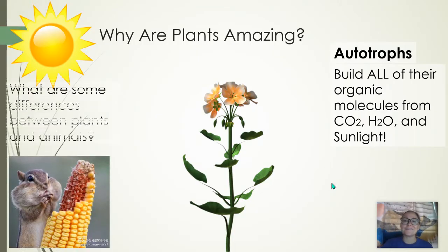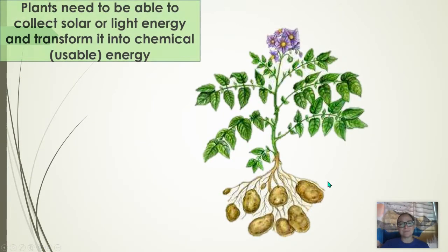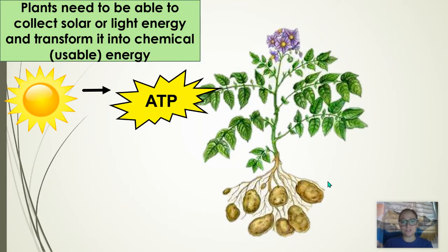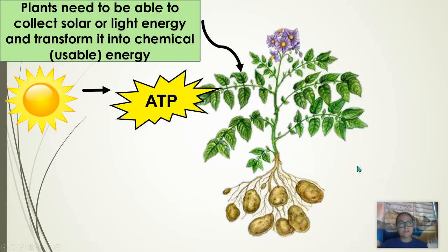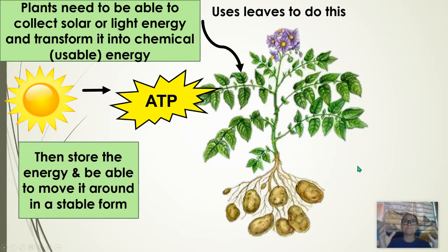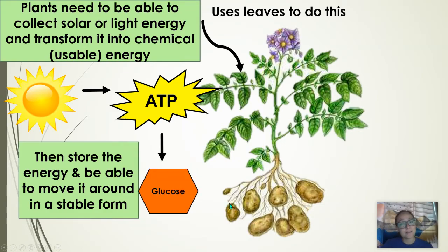Heterotrophs rely on those autotrophs, as we'll see in our ecology unit. Plants need to collect solar energy — that's what the leaves are for. Solar energy is not usable energy, so the plant needs to convert it into a form that is usable by cells. In the light reaction, solar energy is converted into ATP. However, ATP is not a good energy storage molecule. In the Calvin cycle, the plant figures out how to save the energy gathered from the sun — it's an anabolic pathway requiring an energy input, and that energy is stored in the bonds of glucose molecules or other macromolecules.